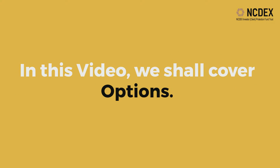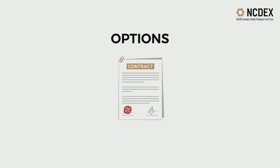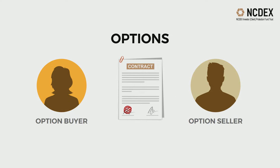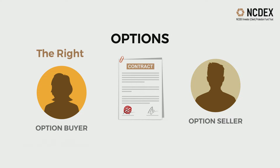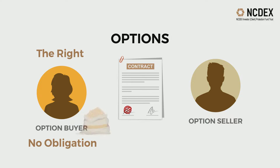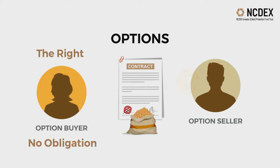In this video, we shall cover options. An option is a type of derivative contract which gives the option buyer, also known as the option holder, the right but not the obligation to buy or sell an underlying asset. The option buyer pays a price called the option premium to the option seller, also known as the option writer, for this right.